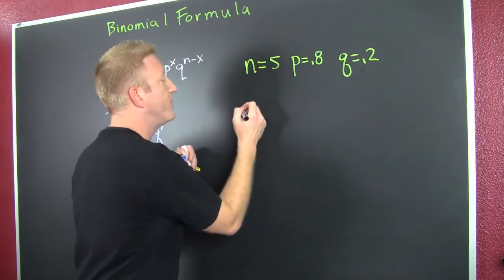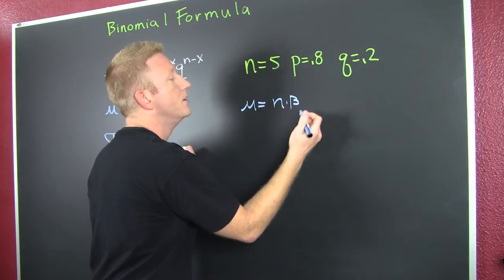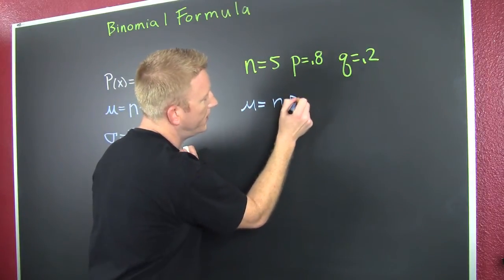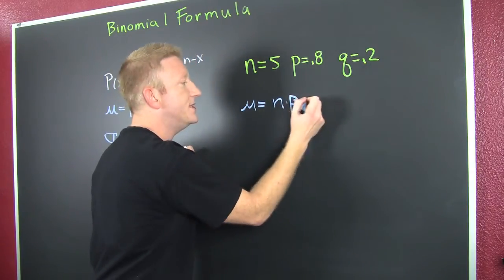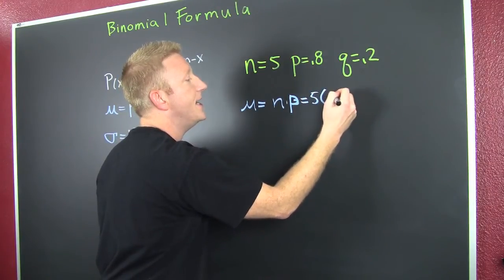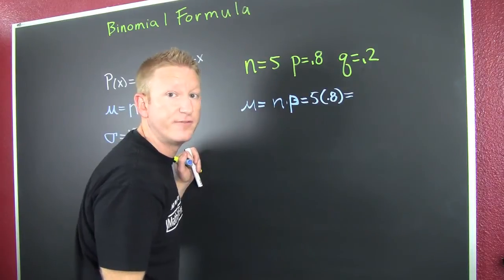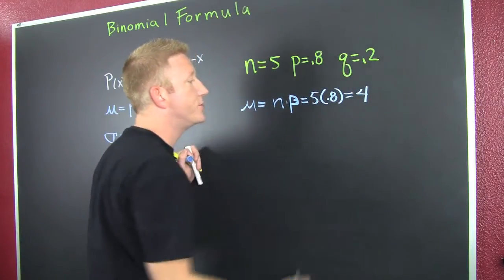So now if I'm going to go in, I'm going to try to find mu. Mu is n times p. So here we see that's going to be 5 times 0.8. Great. And the last time I checked, that was 4.